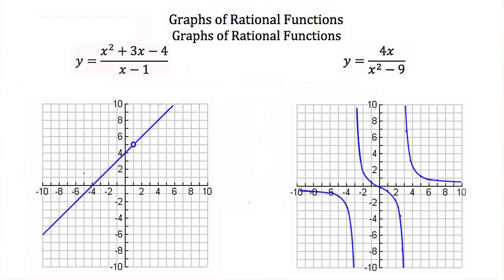Now let's talk about the graphs of rational functions. The graph can look many different ways. In our first example, y = (x² + 3x - 4) / (x - 1), the graph is a straight line, but notice there's an open circle where x = 1. This hole in our graph comes from our denominator: x - 1 cannot equal zero, so x cannot equal 1, restricting our domain.